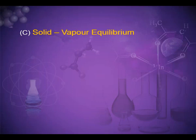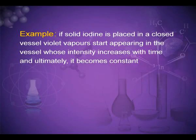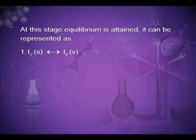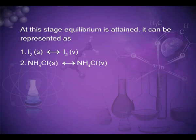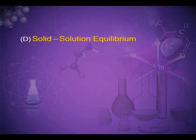The third is solid-vapor equilibrium. This type of equilibrium is attained for solids that undergo sublimation. For example, if solid iodine is placed in a closed vessel, violet vapors start appearing whose intensity increases with time and ultimately becomes constant. At this stage equilibrium is attained: I₂ (solid) ⇌ I₂ (vapor). Another example is ammonium chloride: NH₄Cl (solid) ⇌ NH₄Cl (vapor).